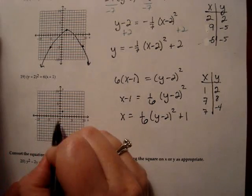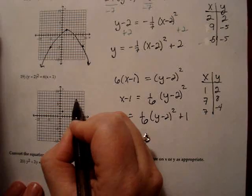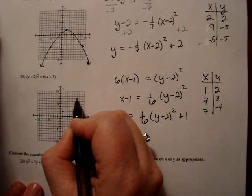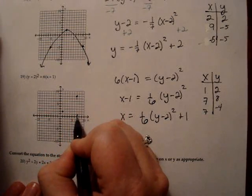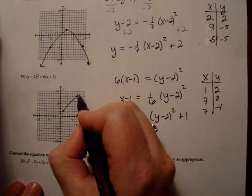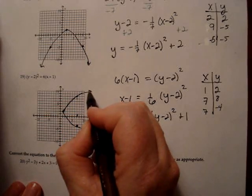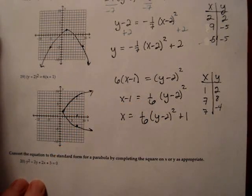So let's graph those. So this says if x is 7, then y is either 8, one more up, or negative 4. And now I can draw my parabola. Excellent. Done.